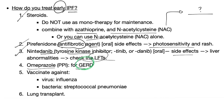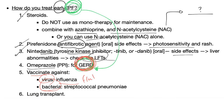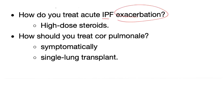Omeprazole for GERD, because many patients with interstitial pulmonary fibrosis have GERD at the same time. Vaccinate against viruses — give the influenza vaccine — and against bacteria such as the pneumococcal vaccine. Lung transplant is the last resort. For IPF exacerbations, use high-dose steroids. For cor pulmonale, treat symptomatically, with single lung transplant as a last resort.